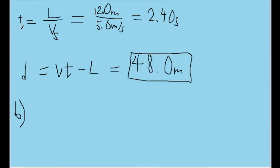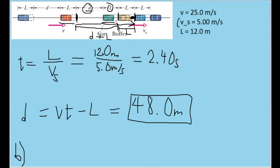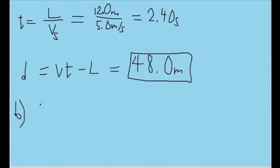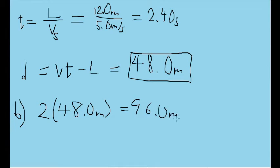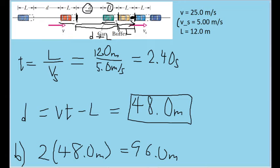In Part B, we're asked to solve for the motion of the shockwave if D, the separation of the fast cars, is doubled. First, let's double the value we found in Part A — 48 meters — giving us 96.0 meters. If we keep all other variables the same, the fact that the cars are farther apart means these cars will be approaching the pulse at a much slower rate overall.